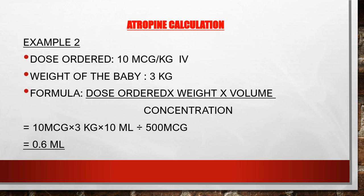Second example for atropine calculation. The dose ordered is 10 microgram/kg IV. Weight of the baby is 3 kg. Using the same formula — dose ordered times weight times volume divided by the concentration — the ordered dose is in micrograms: 10 microgram times 3 kg times 10 ml divided by the concentration 500 microgram. You will get 0.6 ml.